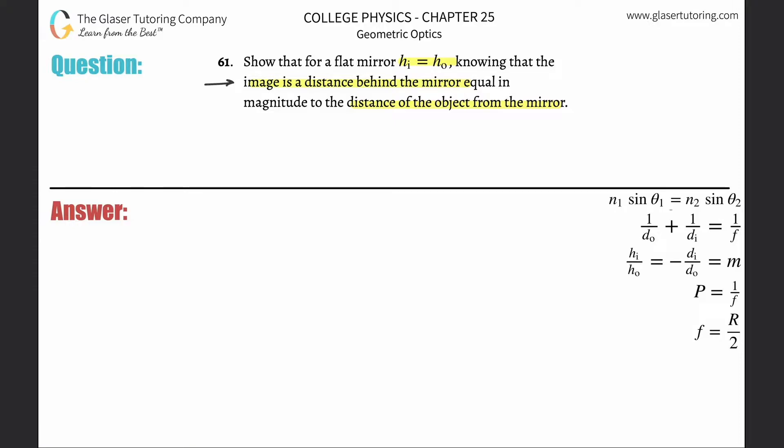So this statement right here means that if the image is behind the mirror, that means the image distance is going to be a negative number. And the object is in front of the mirror, basically. So that means that the object distance is going to be a positive number.